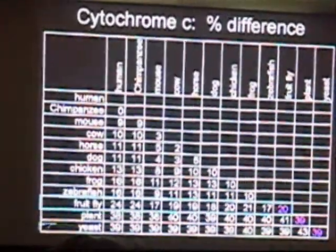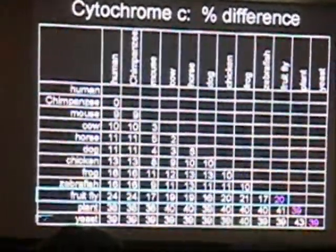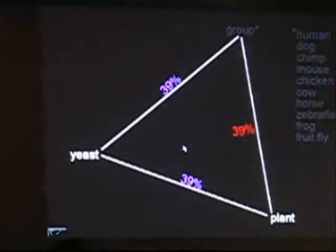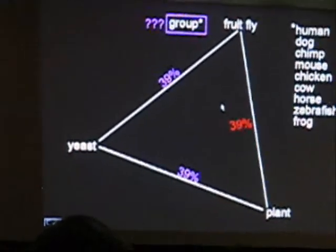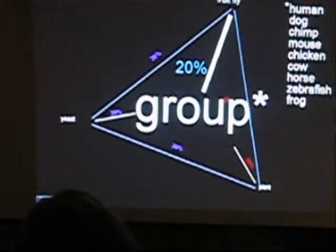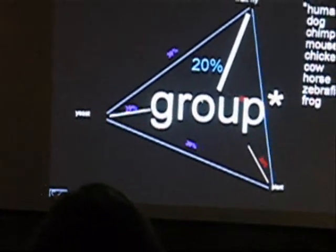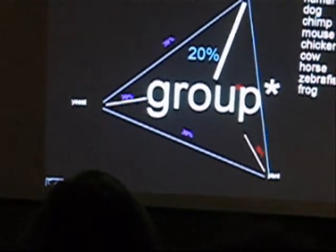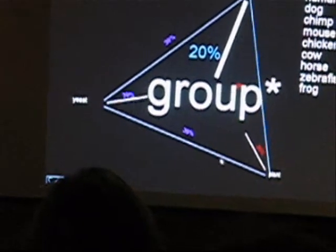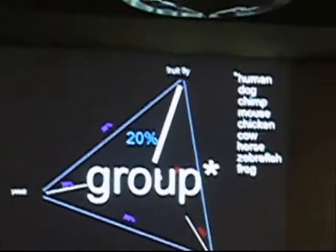Moving to the third row of data: fruit fly is roughly 20% different from everything else — about 24%, 17%, which is just biological noise in a bigger data set. Fruit fly is 39% different from yeast and plants, but 20% from the remaining group. The only way to represent this is to go into the third dimension — think of it as a pyramid projecting toward you. Then for zebrafish, which is about 12% different from chicken, dog, horse, and everything above it, we'd need to go into the fourth dimension, since the number of dimensions required equals the number of organism groups.